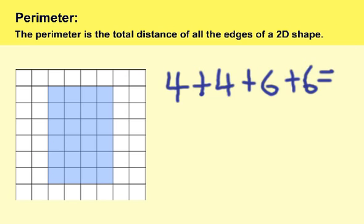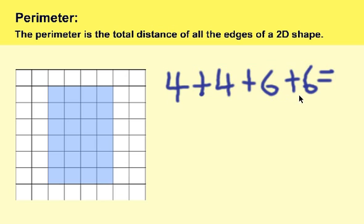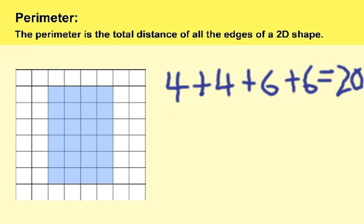Pretty simple. Four plus four is eight. Eight plus six is fourteen, and fourteen plus six is twenty. So we have twenty. Therefore, the perimeter of this shape would be twenty. It didn't really give us the units — whether it's centimeters, meters, miles, or inches — but we know it's twenty because we have four units on top, four on the bottom, six on this side, and six on the other side. Four plus four plus six plus six comes to a total of twenty.